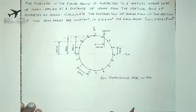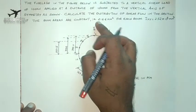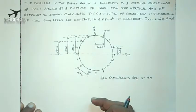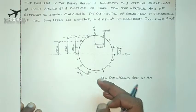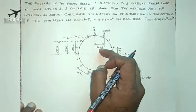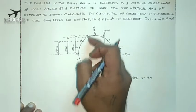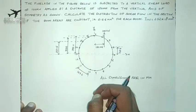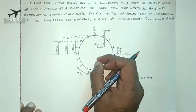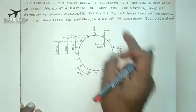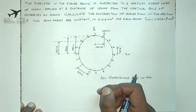We have calculated the boom areas and moment of inertia in the previous question. We are doing the same question, applying the load of 100 kN at a distance of 150 mm from the vertical axis of symmetry. They are asking to find out the value of shear flow throughout the section.